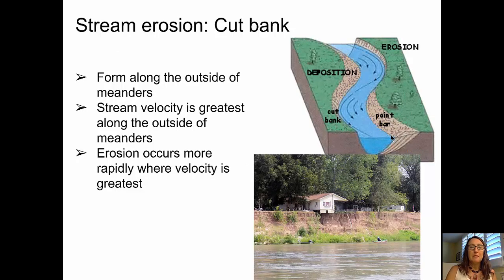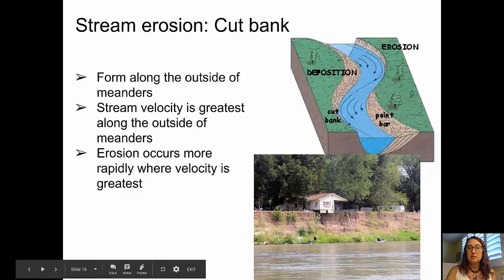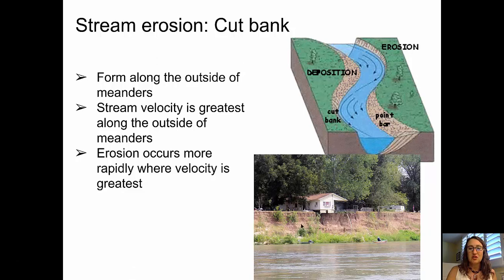Cut banks form on the outside of meanders because that's where the stream velocity, and thus the erosion, is greatest. You can see in the cartoon the formation of that cut bank, with deposition on the inside, and then formation of another cut bank on the outside of the subsequent meander. In the photo below, you can see a cut bank that's threatening to take a house with it as erosion continues to occur.